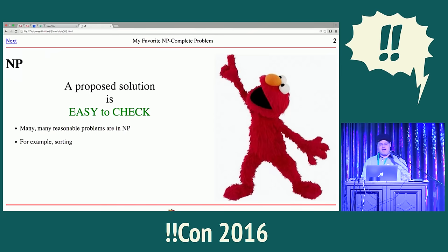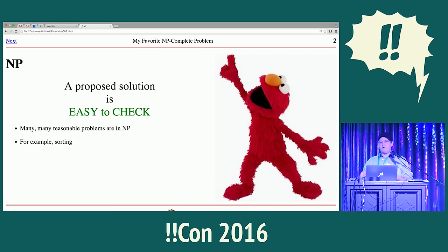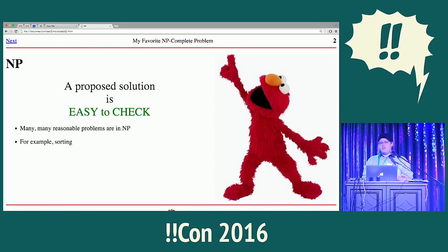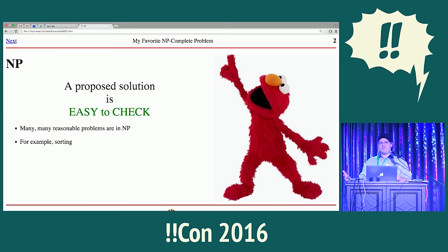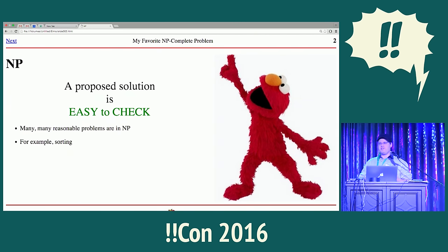Lots and lots of problems are in this class. A kind of dopey example is sorting: if somebody comes along and says 'here's the sorted version of the list,' you just make sure the elements are the same in both lists and that the other person's list has elements in ascending order. You can do that efficiently. Actually, an easier way is to sort the input list yourself and compare — but sorting is not hard to do anyway. Problems that are easy to solve are necessarily easy to check the solutions to.